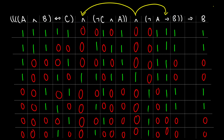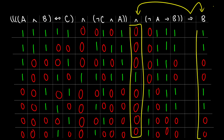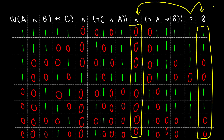We're almost done — just one more to go. We have the final arrow, which gets information from our combined premises column and from B. If this is a valid argument, everything under the arrow should be true — everything should be one. Row 1: 0 arrow 1, true. Row 2: 0 arrow 1, true. Row 3: 0 arrow 0, true. Row 4: 1 arrow 0, that's false. Row 5: 0 arrow 1, true. Row 6: 0 arrow 1, true. Row 7: 0 arrow 0, true. Row 8: 0 arrow 0, true.